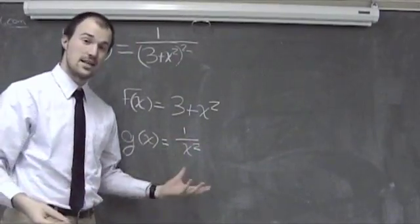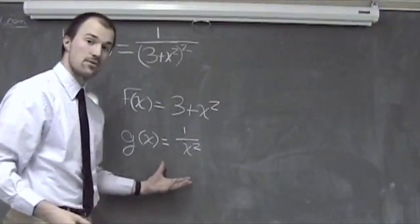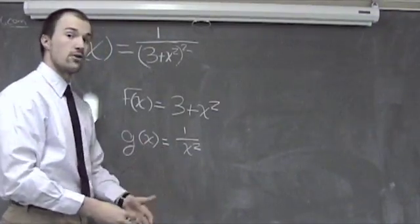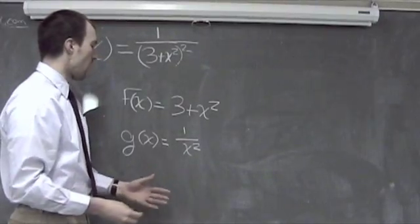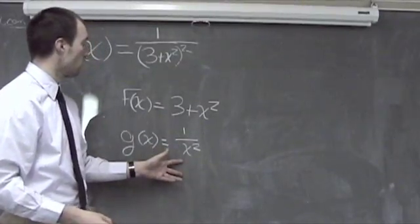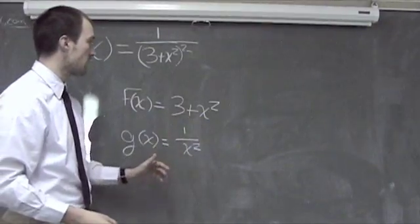Now to see and check if we actually have this type of composition and figure out which composition we have, I have 1 over x squared and the 3 plus x squared.